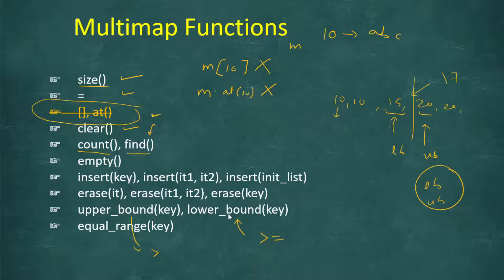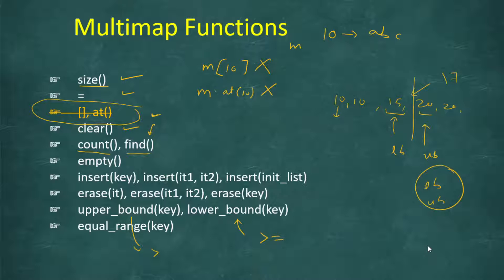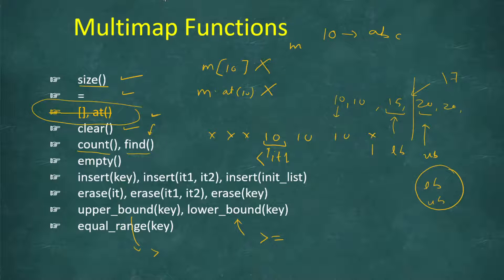We also have a function called equal_range(key), which returns a range - this was not present in map. Since we can have multiple entries of the same key, if we have three entries of key 10 and call equal_range(10), it returns a pair of iterators: it1 pointing to the first occurrence of 10 and it2 pointing just past the last 10. Using this pair, you can access all entries with key 10.